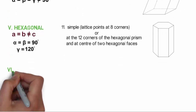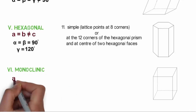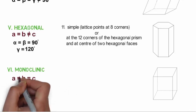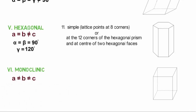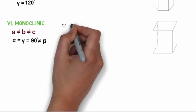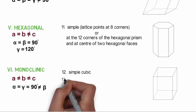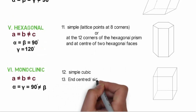The next one is monoclinic, where A, B and C all have different lengths, and alpha and gamma angles are equal to 90 degrees but not equal to beta. Monoclinic structure can have simple cubic and end-centered lattice structures.